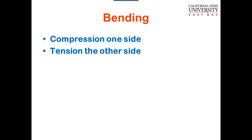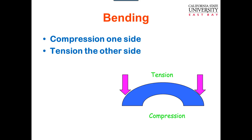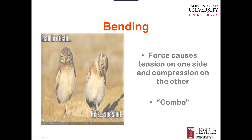Bending is another composite loading. When you bend something, compression occurs on one side and tension on the other. So if we have a stick or block and you bend it, you have tension on the top side and compression on the bottom side. Bone is always weakest under tension, so your orthopedic surgeon or doctor can tell you how a fracture happened based on where it is, because they know the bone is weaker under tension than compression.